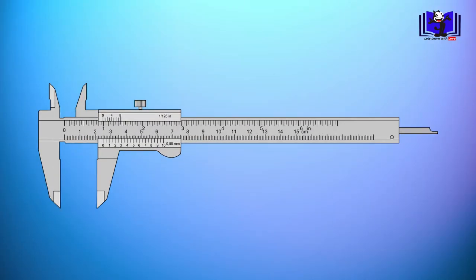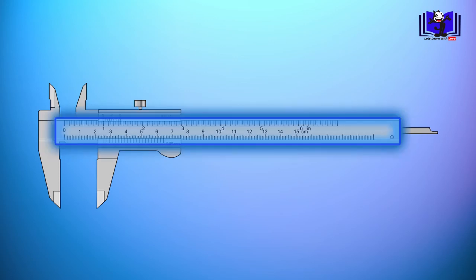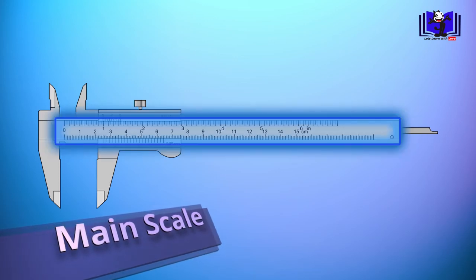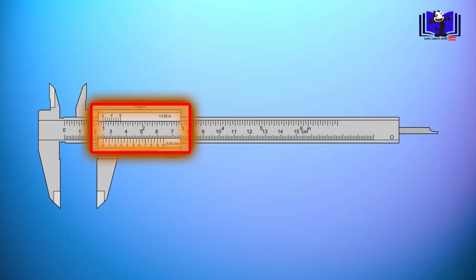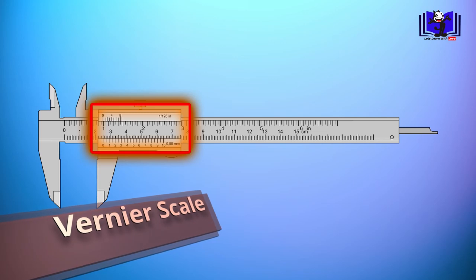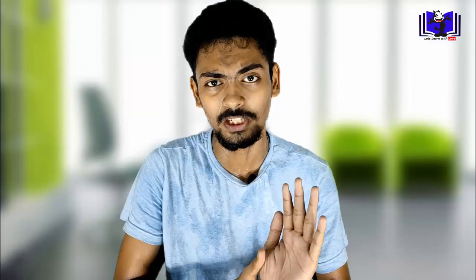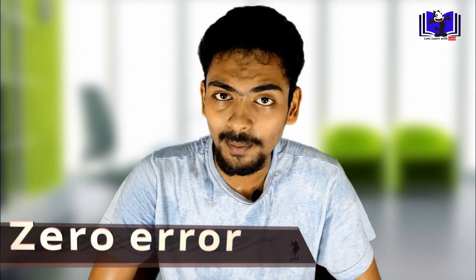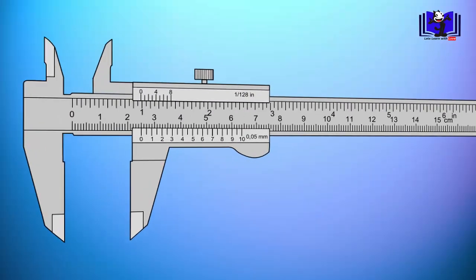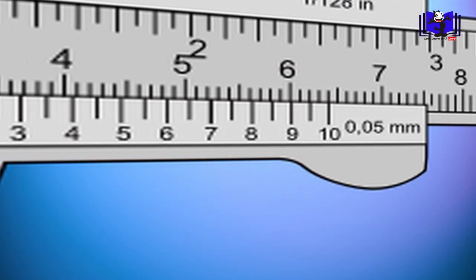Now I'll tell you how to use the Vernier caliper. First, we'll take the Vernier caliper. If you look at the Vernier caliper, there are two scales. One is the main scale and the other is the Vernier scale. We'll explain both scales.